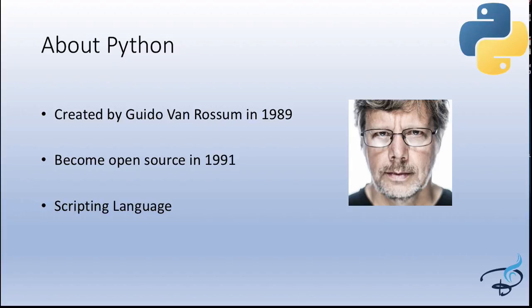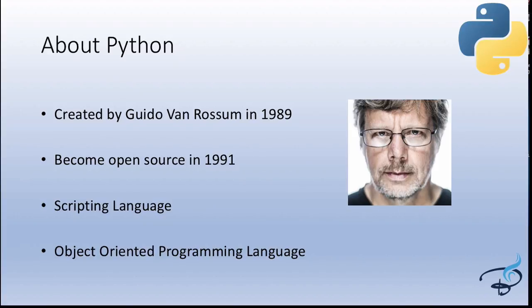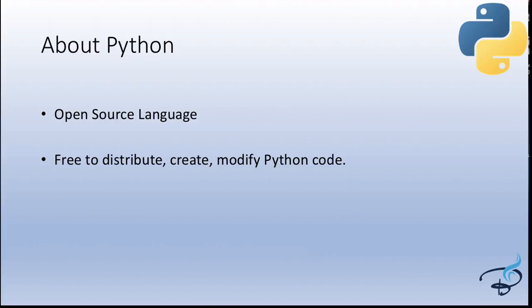Python directly converts your code into machine code — a super cool thing. Python is also an object-oriented language. We will talk about what object-oriented means in later episodes, but think of it as an awesome way of coding or writing your program.